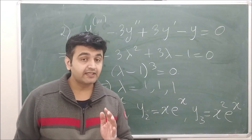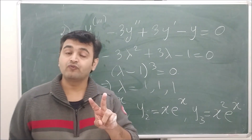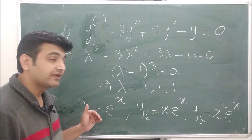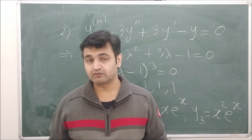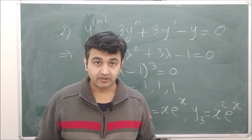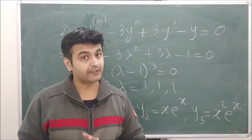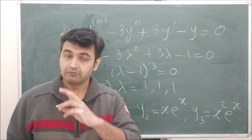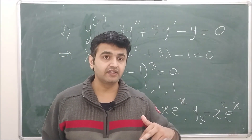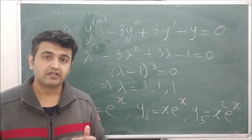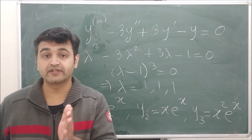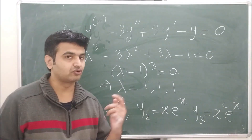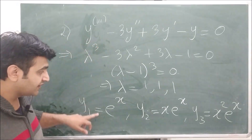One important note on linear independence: the ratio test is only valid for two functions. If y₁/y₂ is constant they are dependent; if non-constant, independent. But with three or more functions you cannot conclude independence just because pairwise ratios are non-constant. For example, cos(2x), sin(2x), and cos(2x) are dependent, yet their pairwise ratios all contain x. So when you have more than two functions, you must use the Wronskian to check independence.